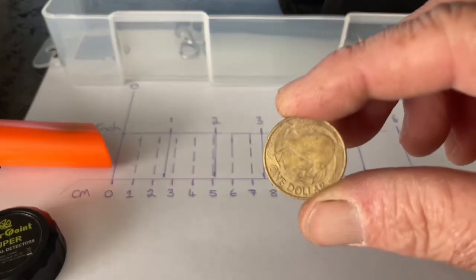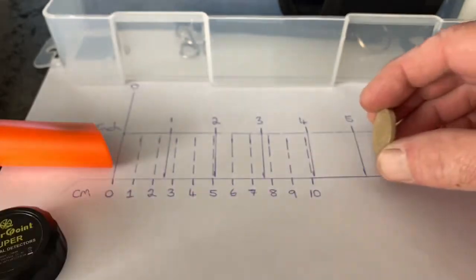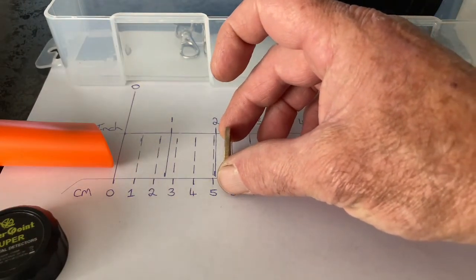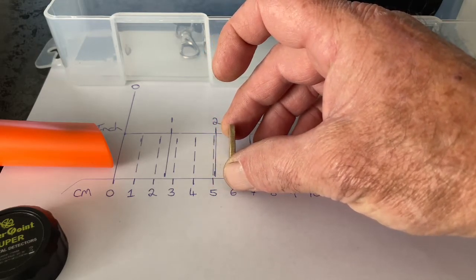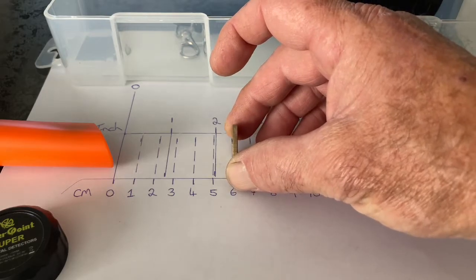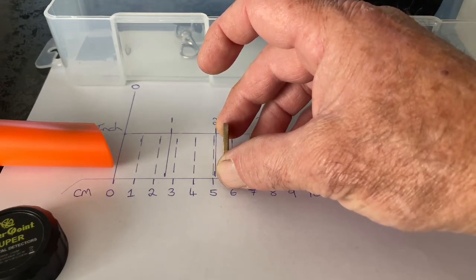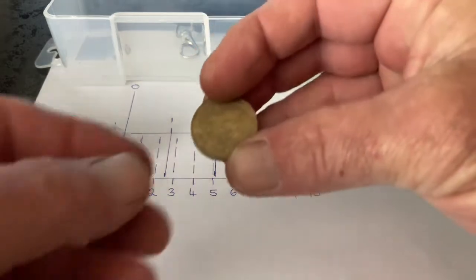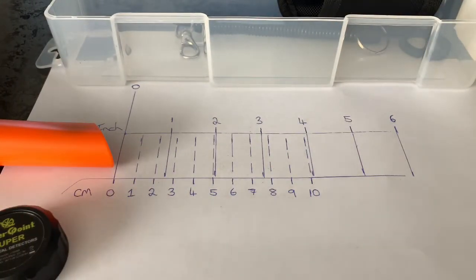And now have a New Zealand one dollar coin. It's about six meters or two and a quarter inches again.